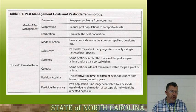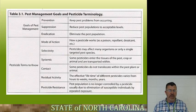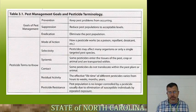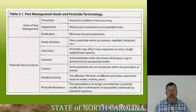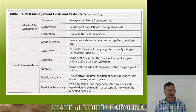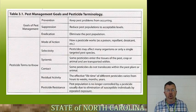For example, 2,4-D goes after broadleaf weeds in turf — it's only going to kill things like clover and dandelions. Broadleaf weeds are killed with a pesticide containing that active ingredient, but it's not going to harm your turf grass. Systemic: some pesticides enter the tissue of the pest, crop, or animal and are transported within. Your textbook gives a good example with arrows showing how that works inside the plant.